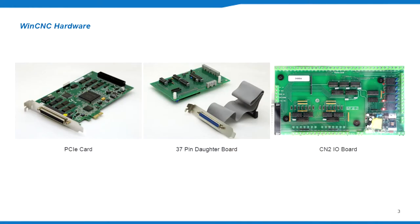To build this control, the WinCNC hardware needed includes the main PCIe card, 37 pin daughter card, and a CN2IO board.